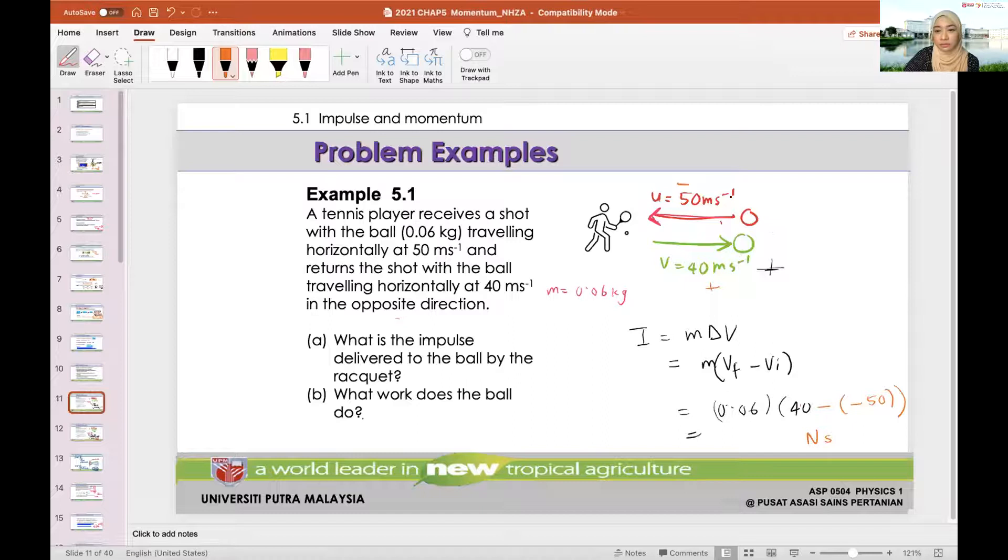So 40 is positive minus minus 50, so you would get 90 over here. So whatever this is, Newton second. 5.4 Newton second. What work does the ball do? So we're talking about work from Chapter 4. Kinetic energy. What's the equation for kinetic energy? KE is equal to 1 over 2 MV squared. But is this equation that we want to use?